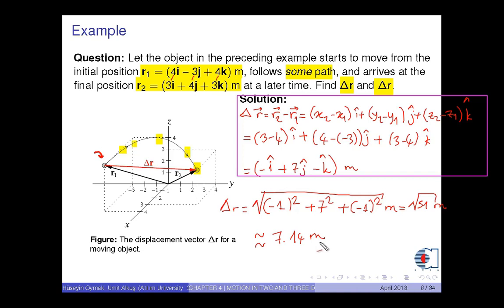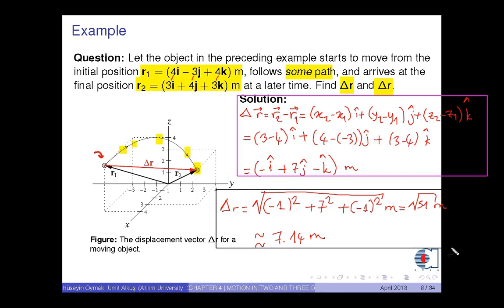You should note that this distance is not equal to the length of the path that the object followed. The conclusion is that the displacement vector of an object does not give any information about the actual path of the object. It provides only the net change in the position of the object moving between two definite positions, vector r1 and vector r2.